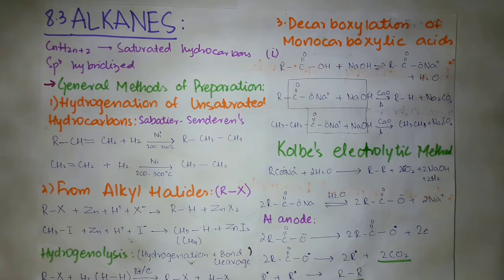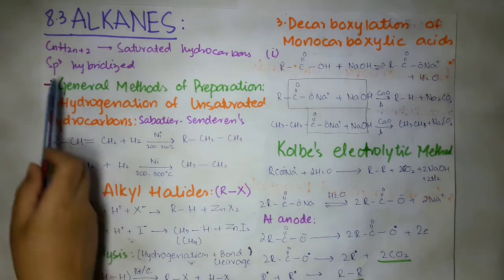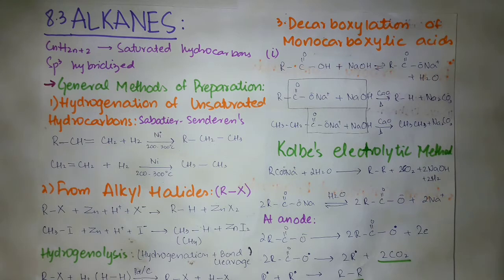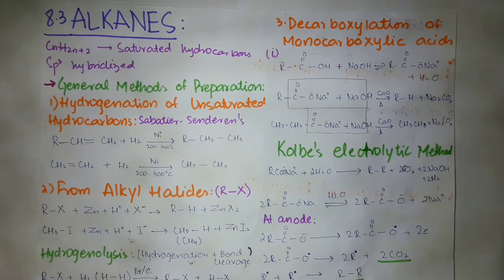There is no double bond or triple bond present. Their general formula is CnH2n+2. This is our general formula which we can use for n = 1, 2, 3 and so on to derive alkanes. Also, the carbon in alkanes is sp3 hybridized — all the carbons in alkanes are sp3 hybridized.